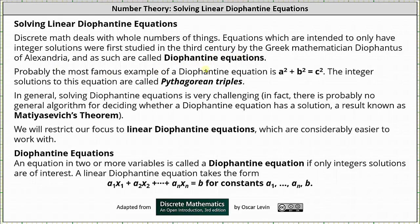Probably the most famous example of a Diophantine equation is a² + b² = c² from the Pythagorean theorem. The integer solutions to this equation are called Pythagorean triples.